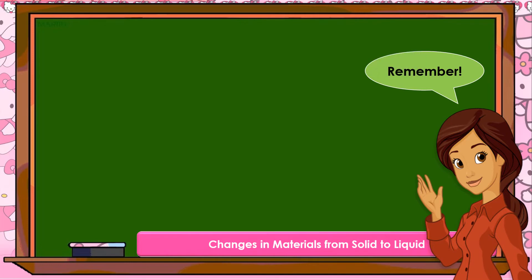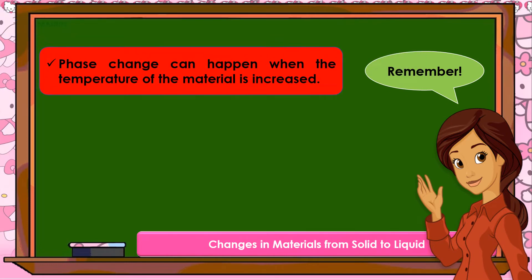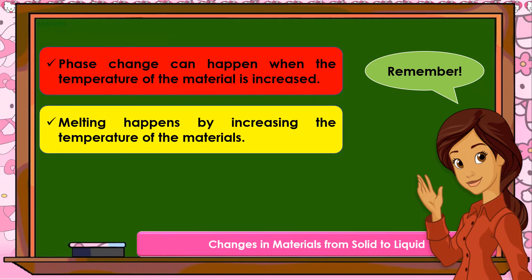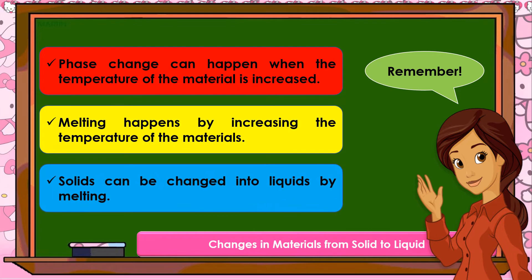Remember: A physical change can happen when the temperature of the material is increased. Melting happens by increasing the temperature of the materials. Solids can be changed into liquids by melting.